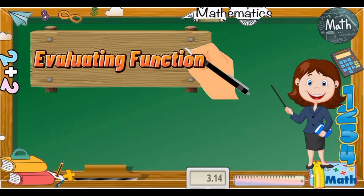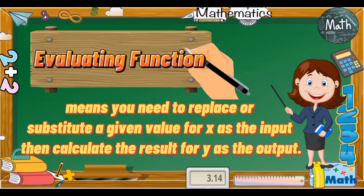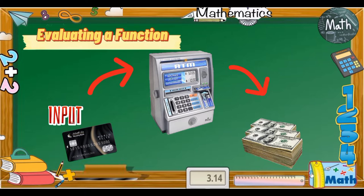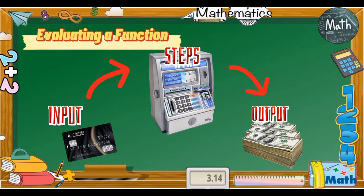Are you guys ready? Let's go! Evaluating a function means you need to replace or substitute a given value for x as the input, then calculate the result for y as the output. This explains how evaluating a function works. In evaluating a function, we have this cycle: first, you need to find the input by substituting your given value for x, then you will do the steps provided, and after that you calculate the result for y to get your output.